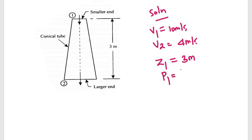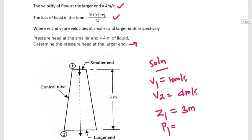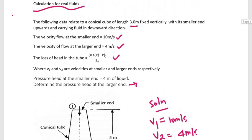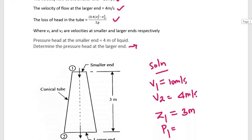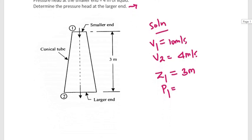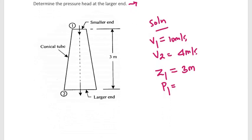For pressure, it is given that the pressure head at the smaller end is 4 meters of the liquid, so P1 over the specific weight of the liquid is equal to 4 meters at point one.